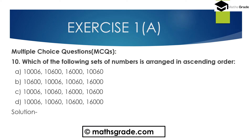Now question number 10, a multiple choice question. Which of the following sets of numbers is arranged in ascending order — that is, in increasing order, from smallest to biggest number? Here, all digits form 5-digit numbers.